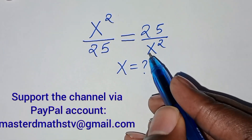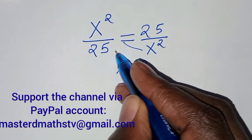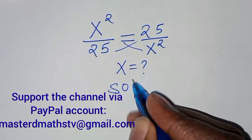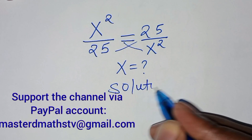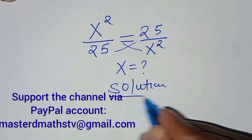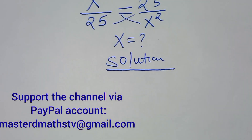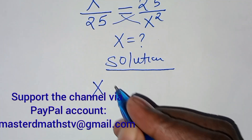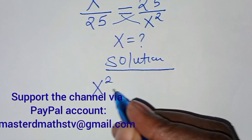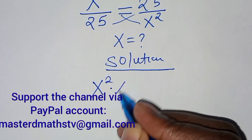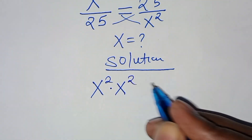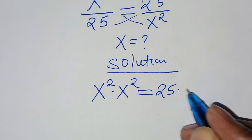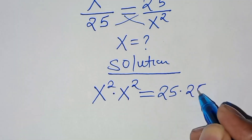The first thing to do here is cross multiply, so that we'll have x to the power 2 times x to the power 2, and this is equal to 25 times 25.